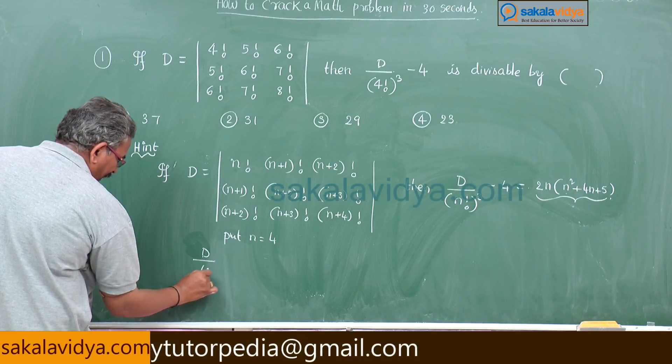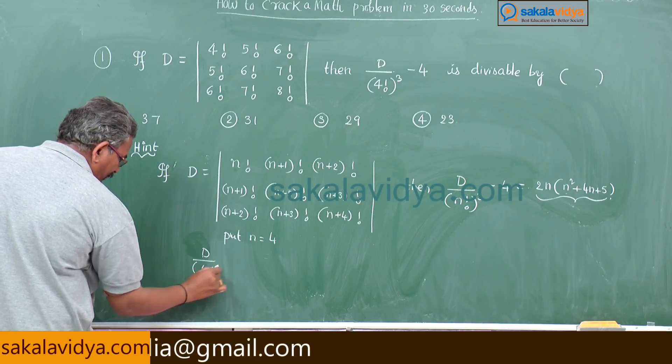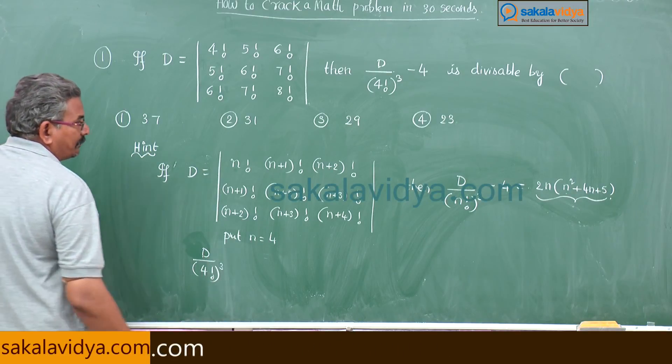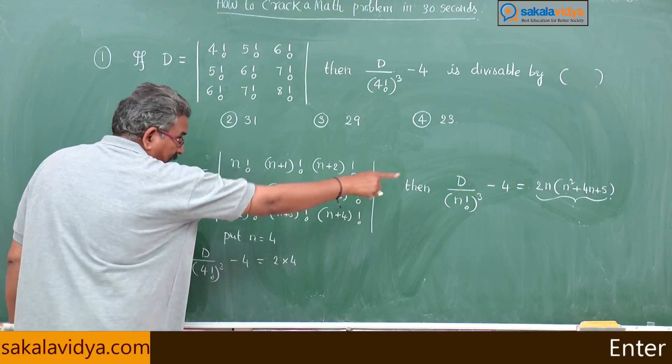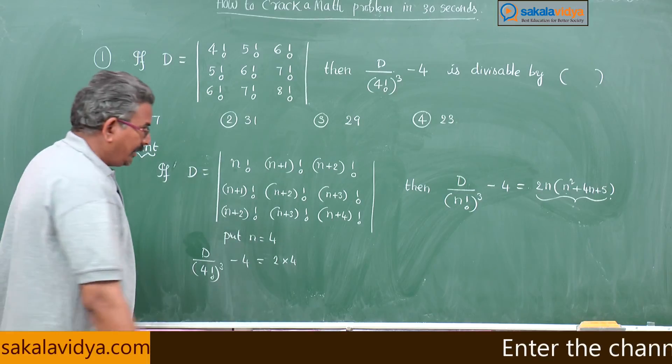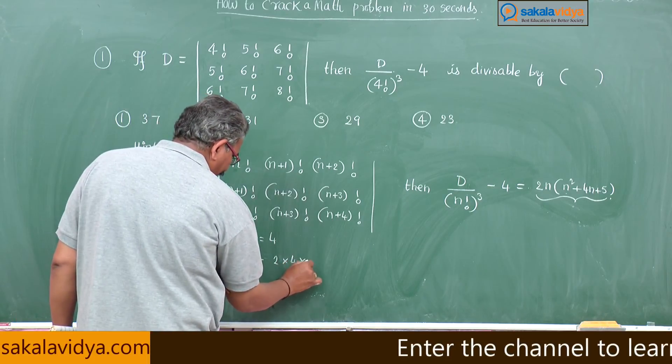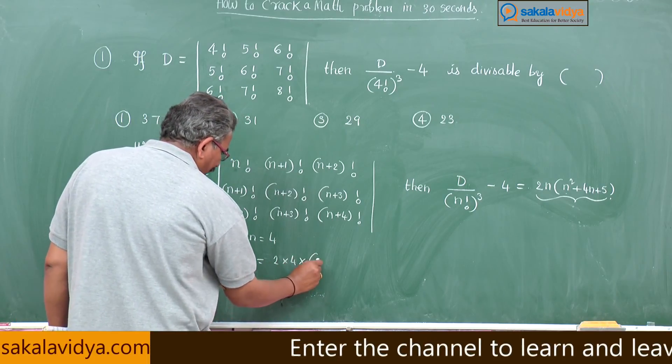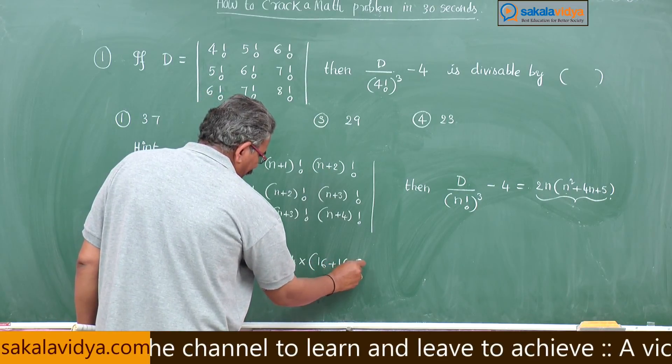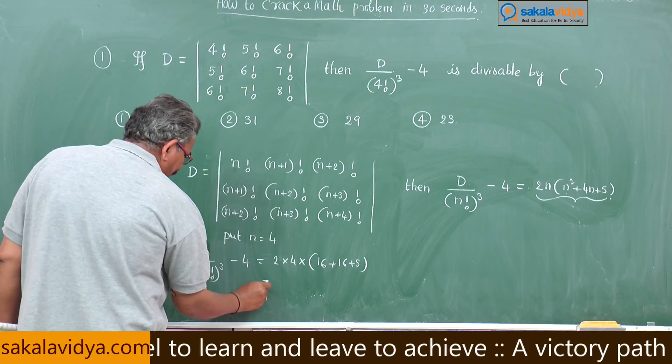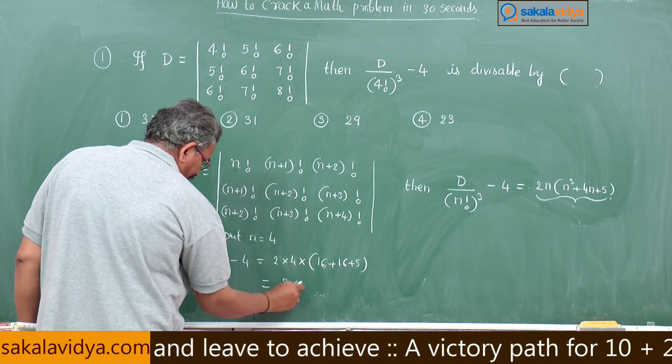Now, D by 4 factorial cubed minus 4 is equal to 2 into 4, N stands for 4 into N square, N square is 16 plus 16 plus 5. This is 8 multiplied by 37.